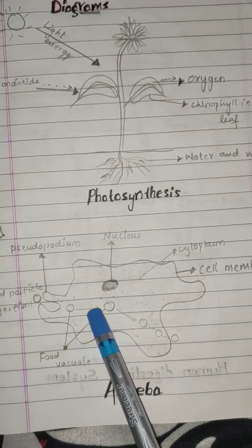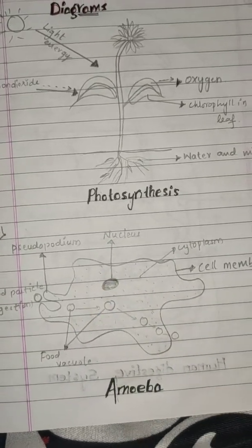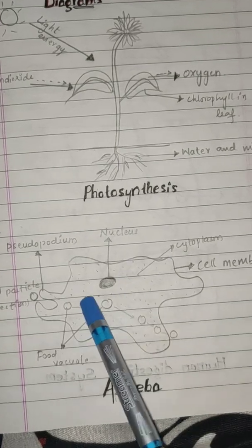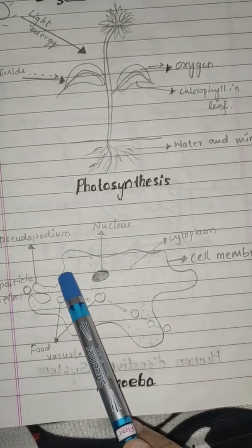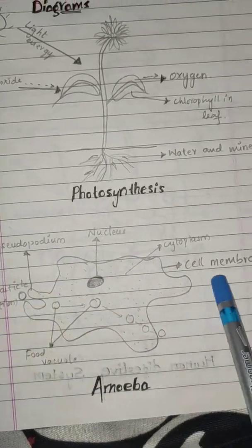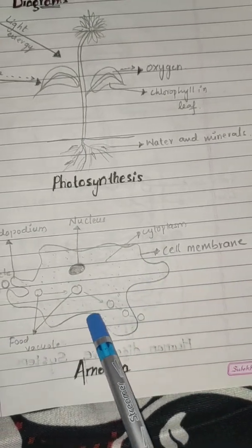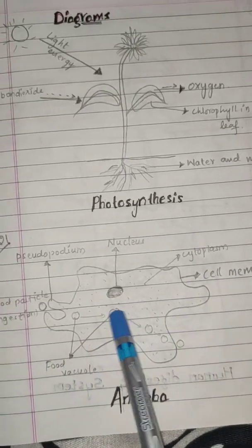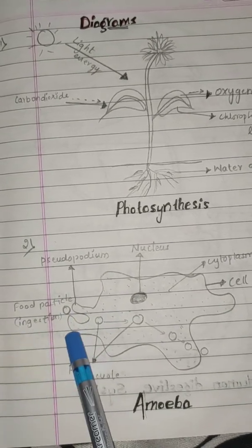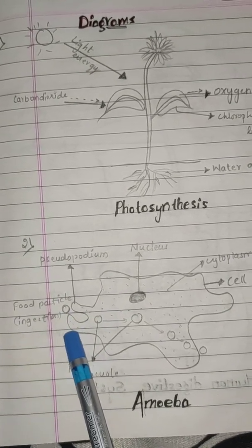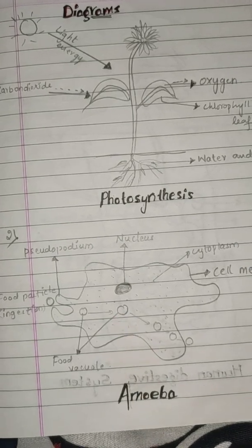This is the cytoplasm — a liquid-like material. And here is the cell membrane, the outer line. Next, this is a food vacuole and the food particle ingestion — that process is called ingestion. So this is the food vacuole.